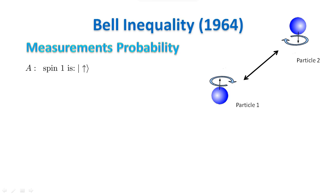We are now ready to derive the Bell inequality. There are many versions of the inequality — we will derive the simplest one. Suppose we have a collection of paired particles in the singlet state. These pairs are the objects to which we apply the inequality we just proved. In our case the inequality in terms of number of objects translates immediately to probability, because we can perform many experiments and do the statistics. We define property A to be particle 1 in the state up along the z-axis. We define property B to be particle 1 in the state up along the axis at 45 degrees in the x-z plane.